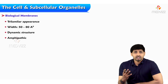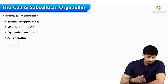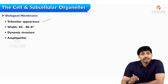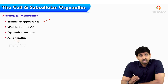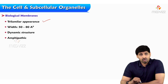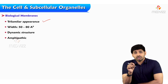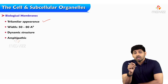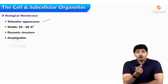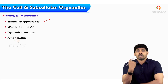What are the characteristics of biological membrane? One, it gives a trilaminar appearance and has a width of 50 to 80 angstroms. It is a dynamic structure — like a surrounding border, like a wall which covers all the subcellular organelles, keeping them inside.